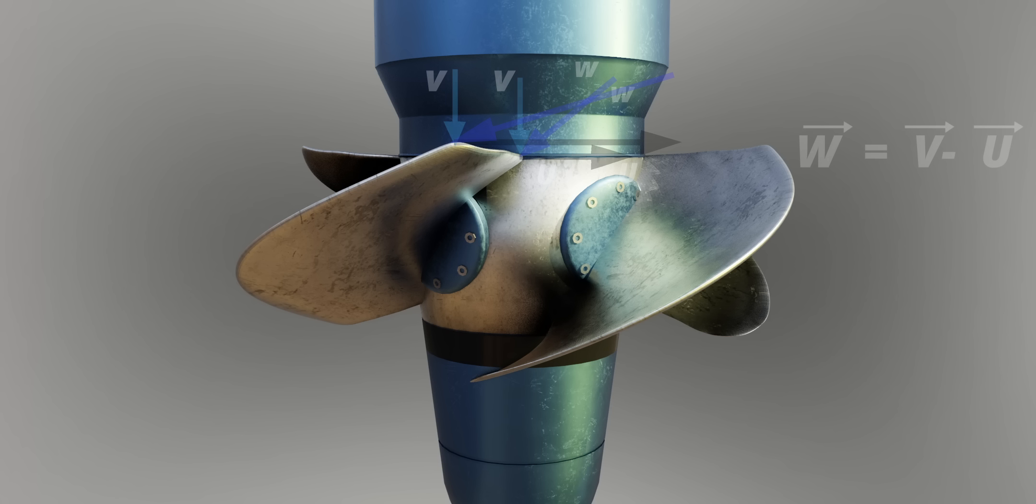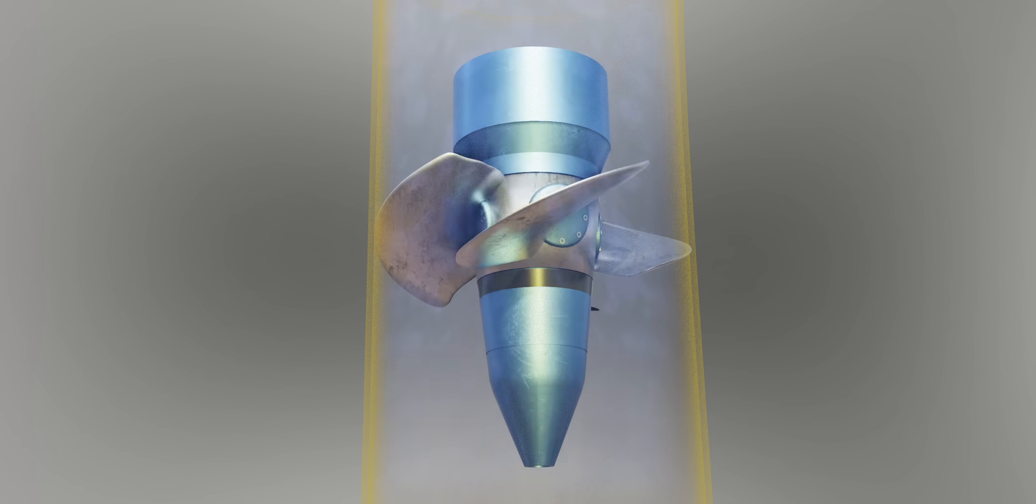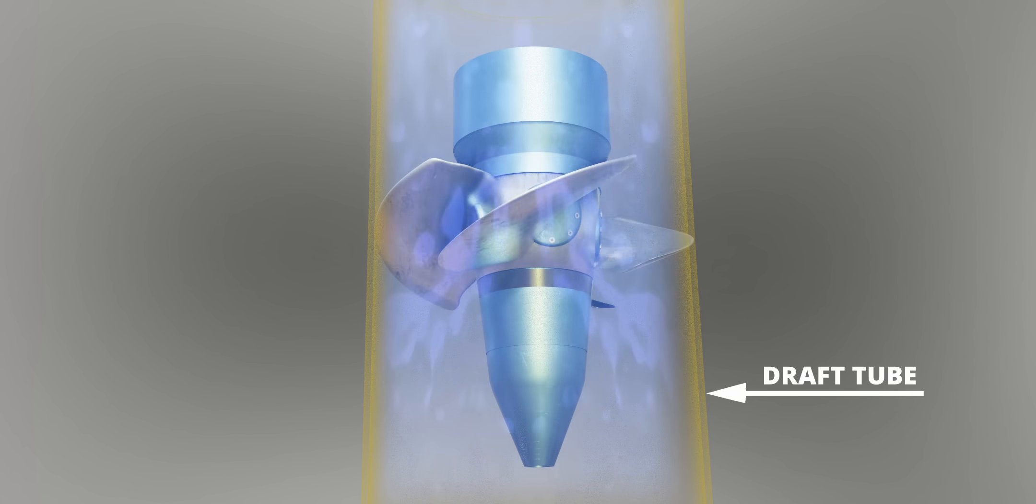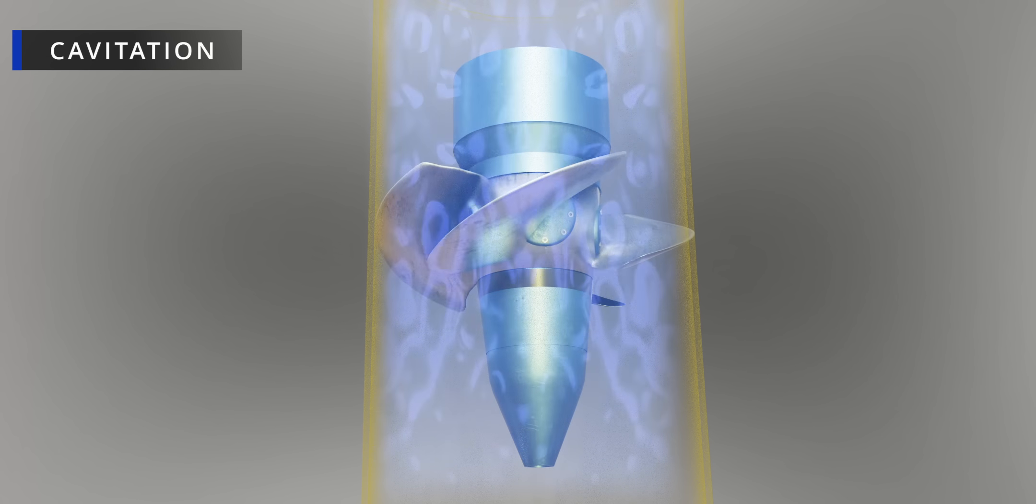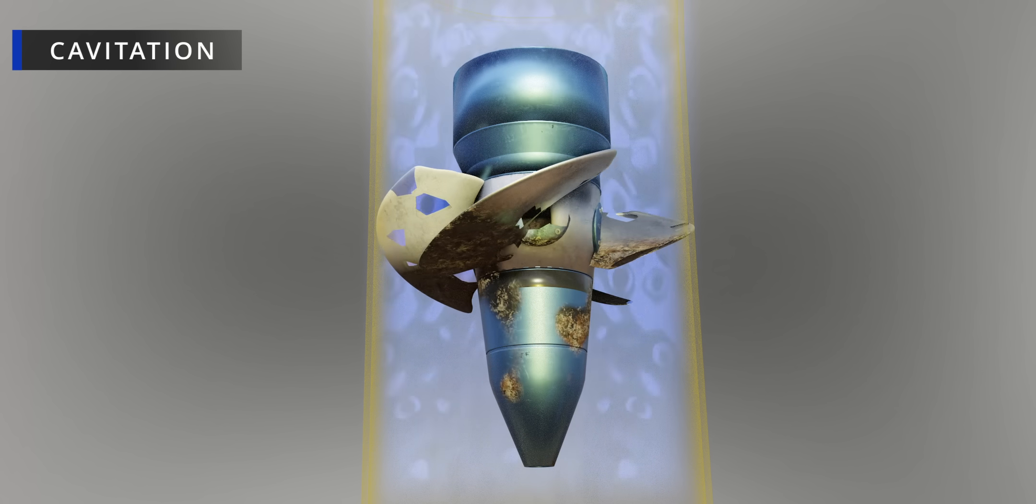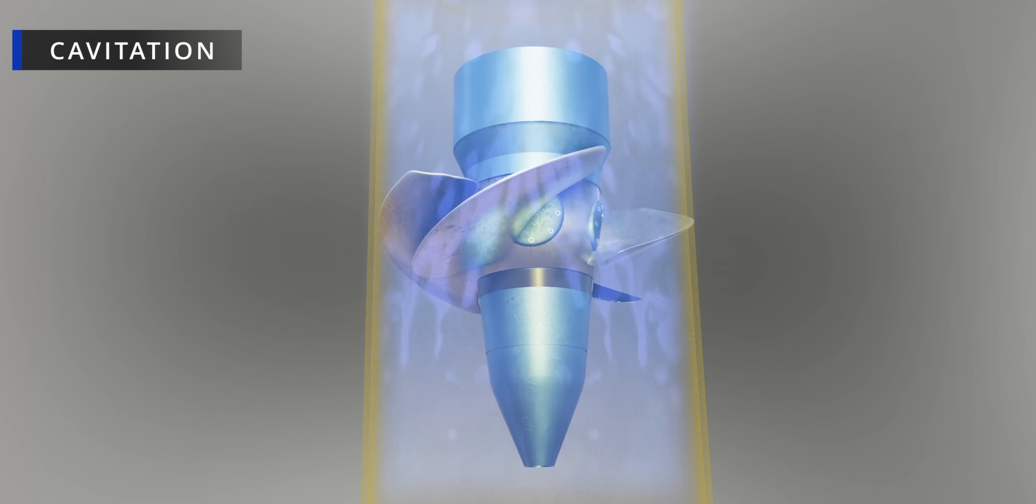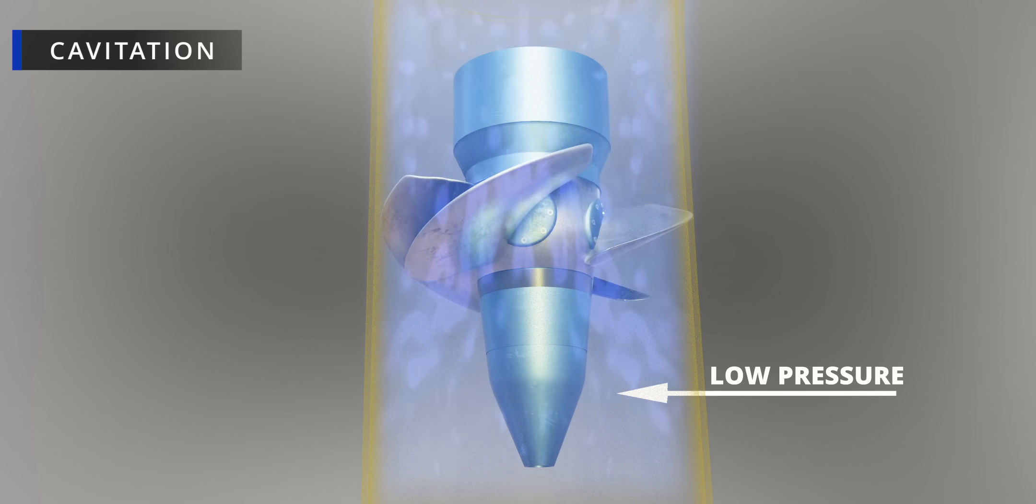After passing through the runner, the water finally escapes through draft tubes. If you don't take proper precautions, a phenomenon called cavitation can occur, and this damages a lot of turbine parts. After the energy extraction from the runner, the pressure of the water is quite low.